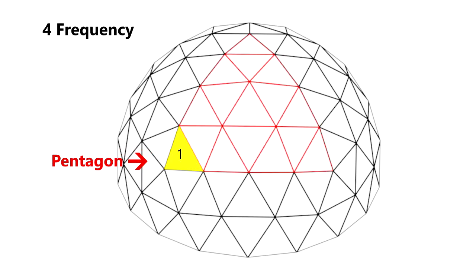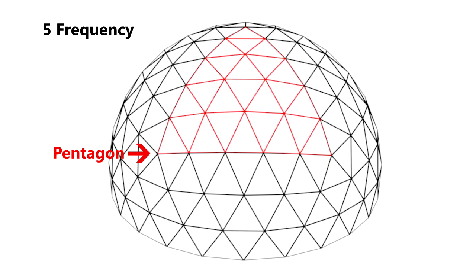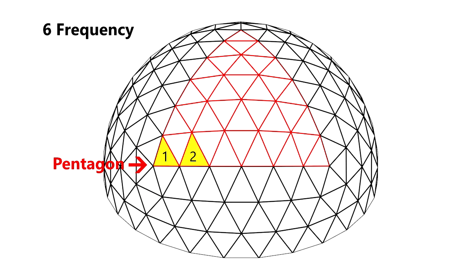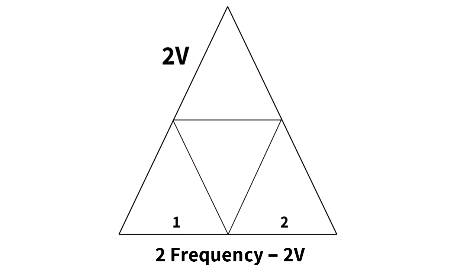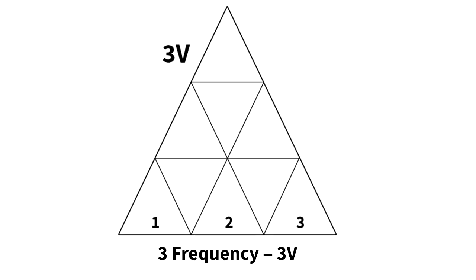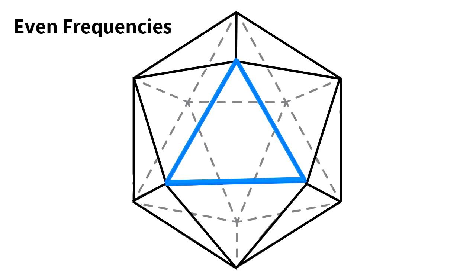In a geodesic dome, each pentagon represents the original hub of the main face of the icosahedron. You can determine the frequency of any dome by counting the number of struts between the centers of each pentagon. For two frequency and higher, the other hubs are hexagons. The higher the frequency, the more curved and spherical the dome is. Frequency is commonly abbreviated with the letter V, so a two frequency dome is called 2V, three frequency is 3V, and so forth.